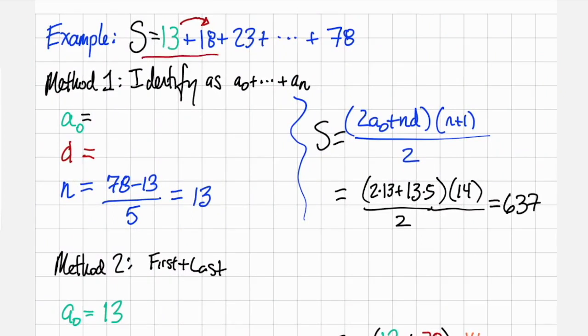Consider the series 13 plus 18 plus 23 plus dot dot dot plus 78. We recognize that this is an arithmetic series because we start off with some value and each time we're adding the same value, we're adding 5 to each term. We have practice writing this series as a0 plus dot dot dot plus an.